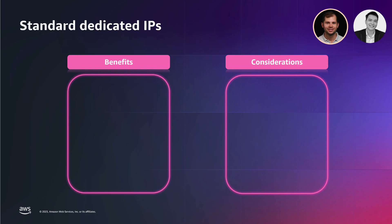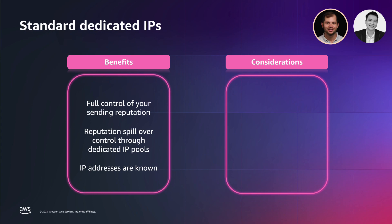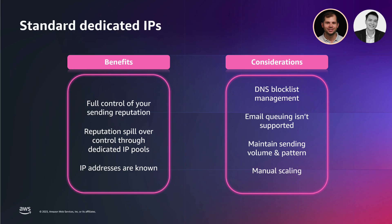Dedicated standard IPs can be leased at an extra fixed cost per IP per month from the Amazon SES console. Using standard dedicated IPs has the following benefits: you are the only sender and in full control of the sending reputation of the IPs you lease. You can create a dedicated IP pool per use case to prevent potential reputational damage between them, and you know the IP addresses you are sending emails from — ideal for use cases where recipients need to allow-list email service providers based on IP addresses. Some considerations: you are responsible for the health of these IPs. If any gets added to a DNS blocklist, you should either relinquish it or contact the postmaster of the domain that rejected your message to request an exception from their spam filtering policy. Some postmasters have support processes and may publish a postmaster page describing this process.